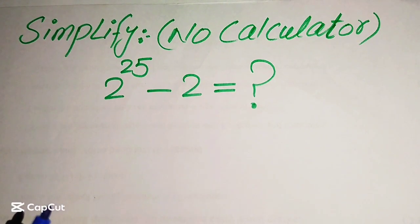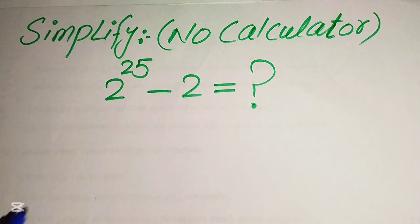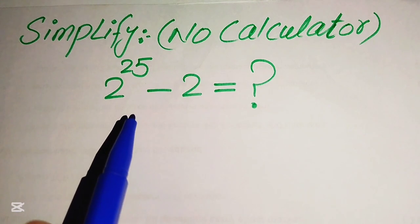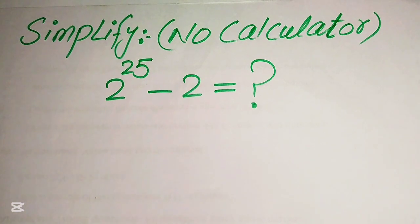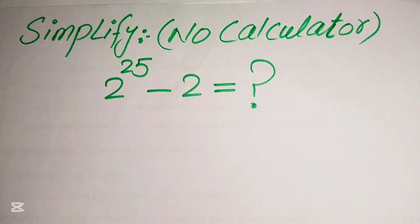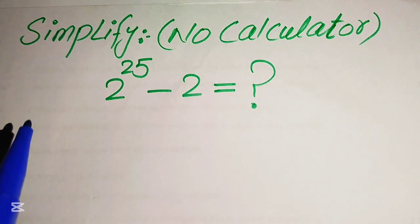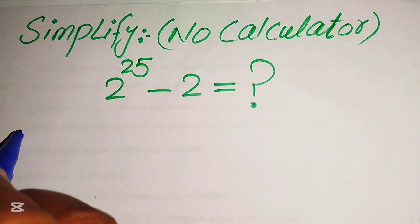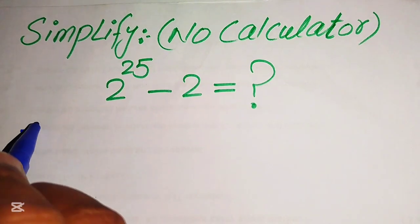Hello everyone. How to simplify this nice algebraic expression: 2 to the power of 25 minus 2. We need to simplify this algebraic expression into the lowest form. Note that a calculator is not allowed in this problem, so we need to show all of the working on paper. The very first step we are going to do is rewrite this expression.